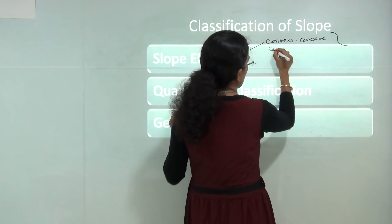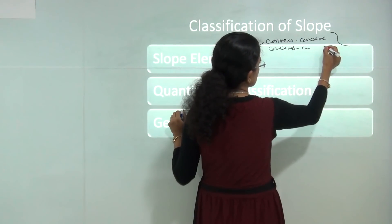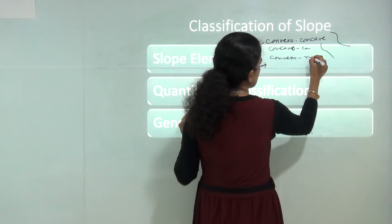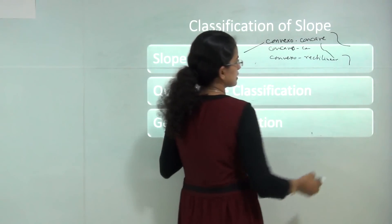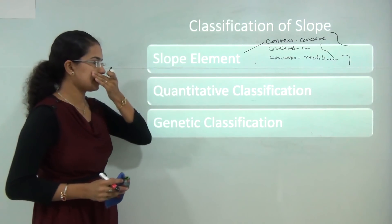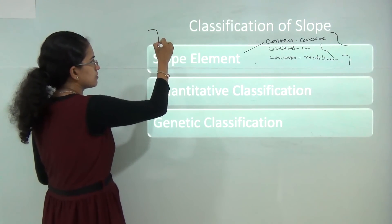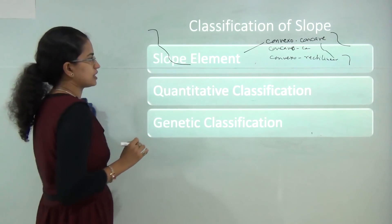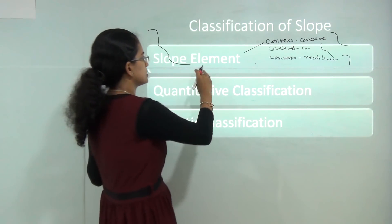Then you have concave then convex, and convex then rectilinear — first convex and then rectilinear. There can be various kinds of slopes based on the four elements: the convex, the free face, the rectilinear, and the concavity. Based on these four elements you have various mixes and matches which can be seen to form the various slope types.